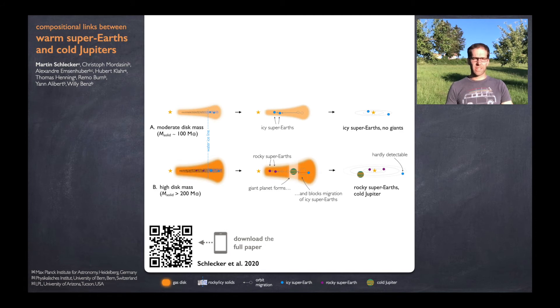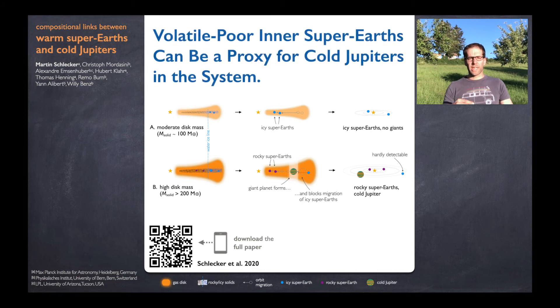From this follows a testable prediction. If you find an inner super-Earth with a high density, you are more likely to find a cold Jupiter in the same system as well.